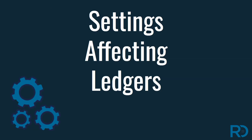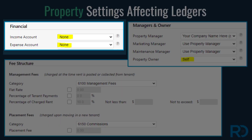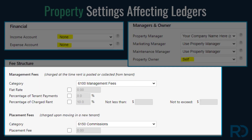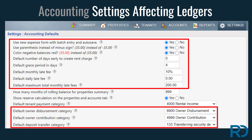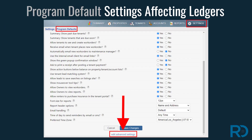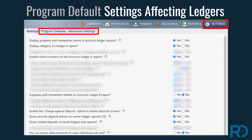Settings are an important part of your account setup, and many settings affect your ledgers. When adding a property, make sure to add default bank accounts, property owners, and management fees so your transactions will flow through ledgers correctly. Accounting defaults found in your settings page will affect how and when transactions are displayed in your ledgers. Be sure to review your advanced program default settings by clicking on the link in the bottom of the program default page, and decide which transaction information is important for you to see in your ledgers. The question mark icon next to each setting will offer additional information to guide you in your selection. Keep in mind that these settings can be adjusted at any point.